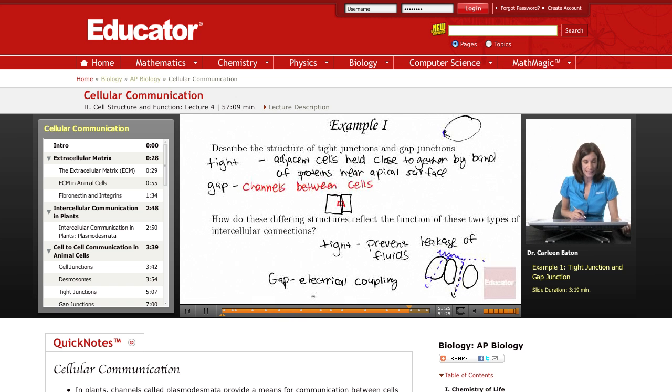Electrical coupling occurs when ions pass from cell to cell. Since they're charged, they can pass that electrical signal along, and this occurs through gap junctions. So the structure of channels allows for that coordination.